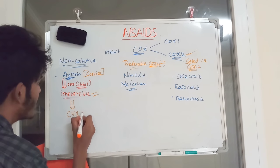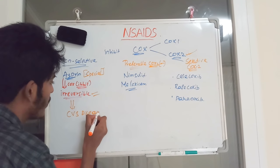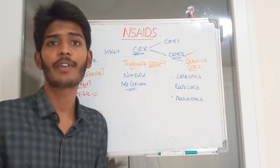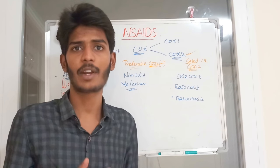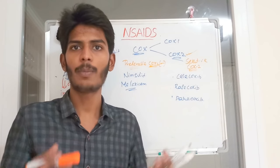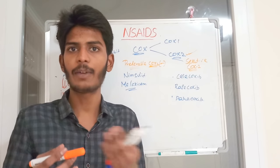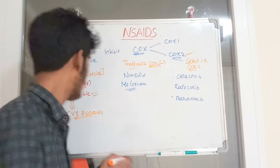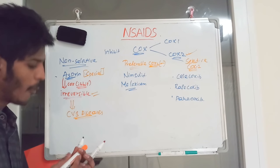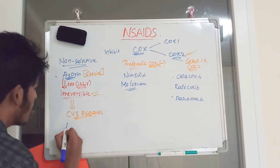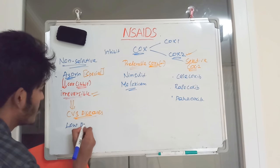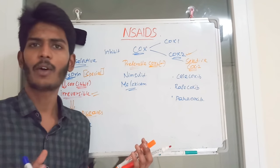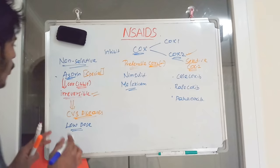This irreversible property of aspirin is majorly used in cardiovascular diseases. In conditions like myocardial infarction due to atherosclerosis, rupture of an atheroma leads to platelet aggregation and arterial occlusion. Aspirin at low doses is used to prevent this, because COX is present abundantly in platelets.